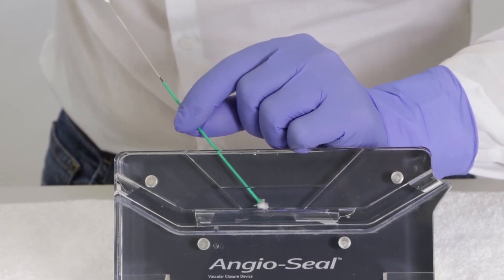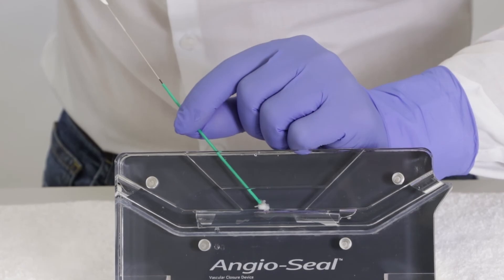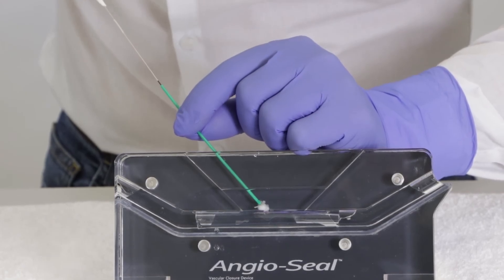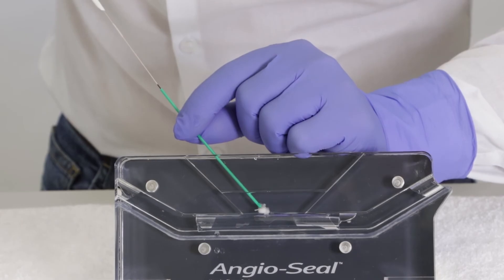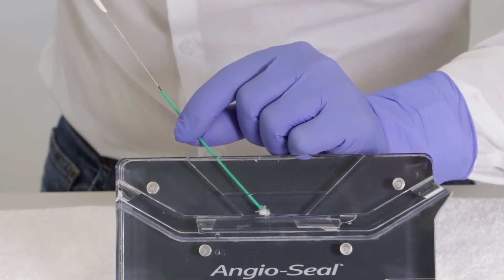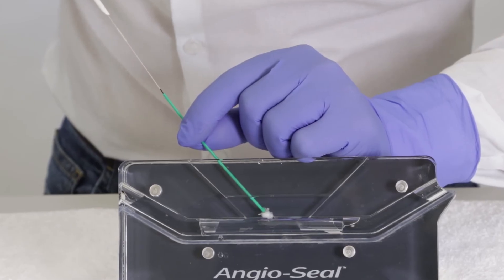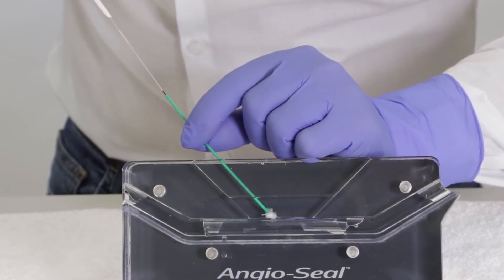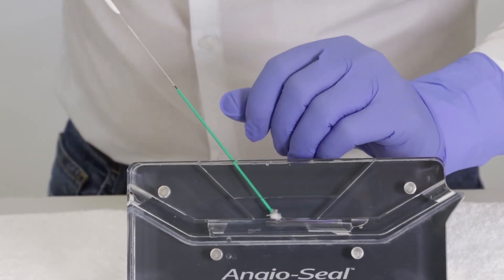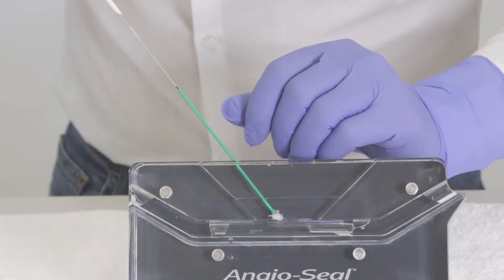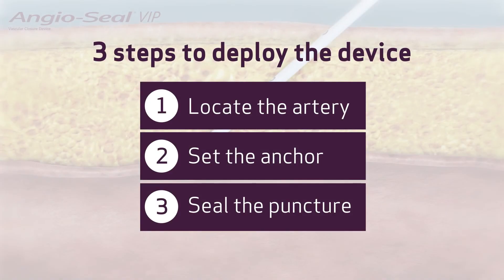The pulling and pushing should happen at the same time. This is called the pull-push technique. The black marker tells you that the collagen is completely compacted down into the arteriotomy. Hold this position for 10 seconds with a little bit of forward compression on the green tube. After 10 seconds you can release the tension. This step is called seal the puncture.